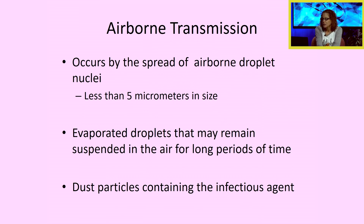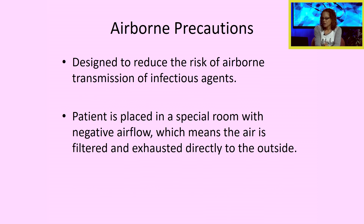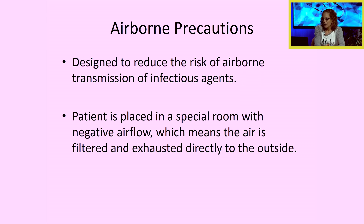For airborne transmission, it occurs by the spread of airborne droplet nuclei less than five micrometers in size. These are evaporated droplets that remain suspended in the air for a long period of time, along with dust particles containing the infectious agent. Airborne precautions are designed to reduce the risk of airborne transmission. The patient is usually placed in a special room with negative airflow, meaning the air is filtered and exhausted directly outside — ventilated up through the roof of the hospital.